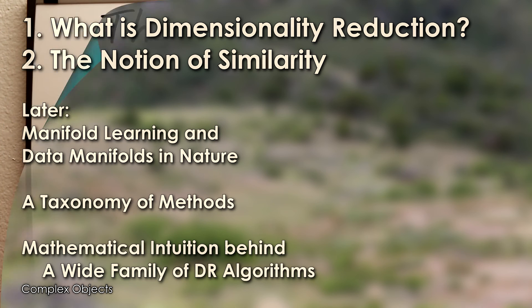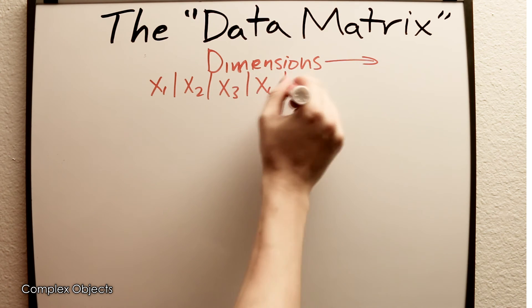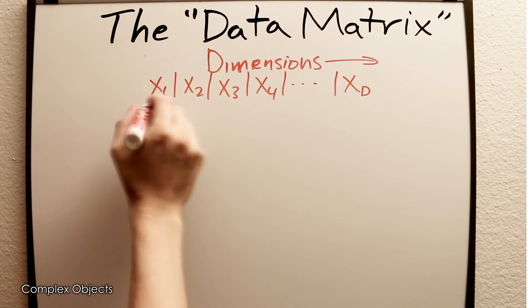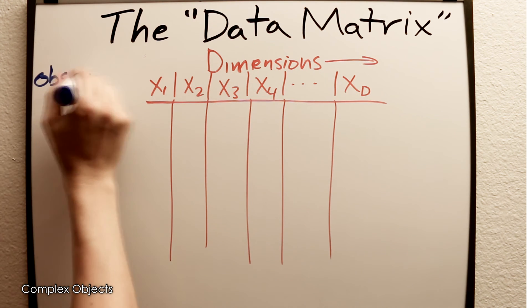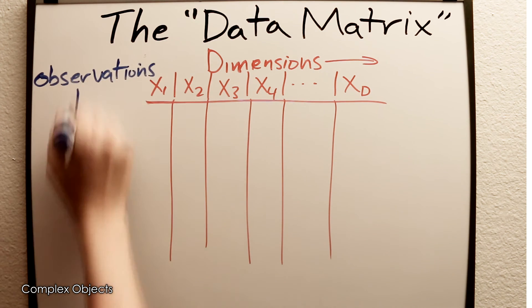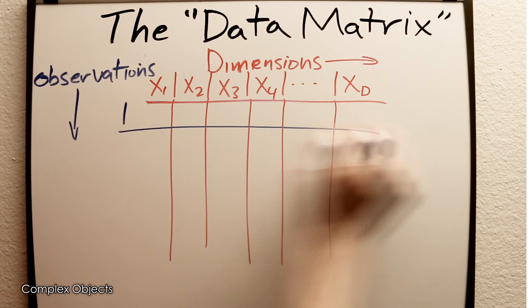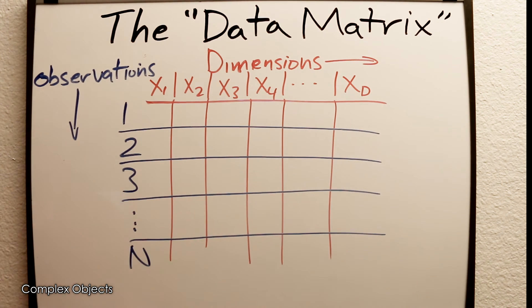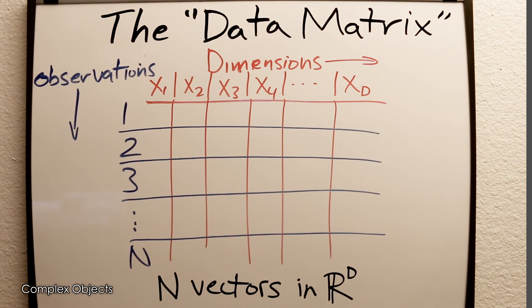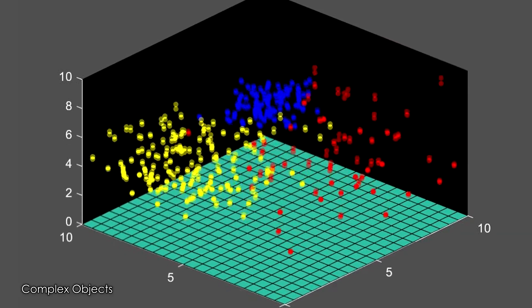So in simplest terms, dimensionality reduction is about taking a set of high dimensional points, or points that exist in a high dimensional space, or in other words vectors which have more components than three, and finding a corresponding set of points in a lower dimensional space. That corresponding set of points can reveal many things about the structure of the points in the original space.